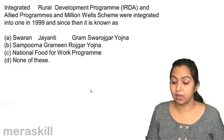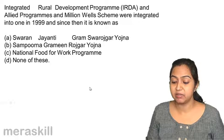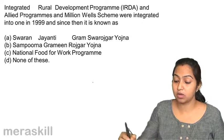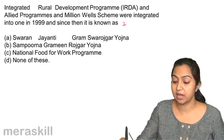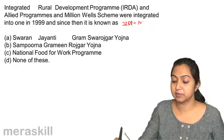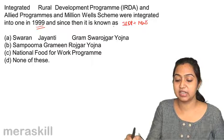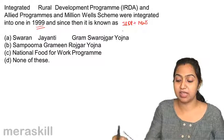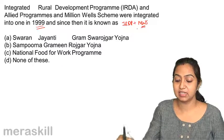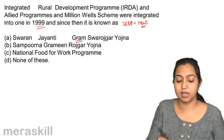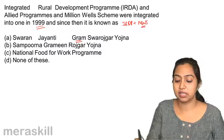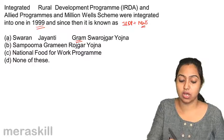IRDP and allied programs and the million wells scheme have been discussed. These were integrated in 1999 and since then have been known as the Swarn Jayanti Gram Swarozgar Yojana.